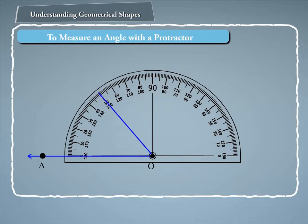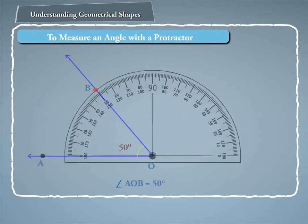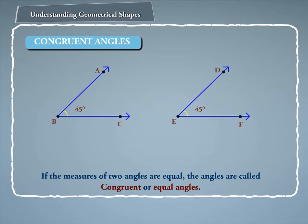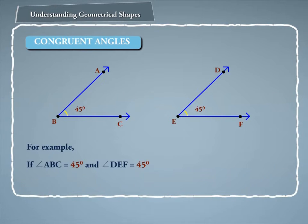Similarly, the measure of angle AOB is equal to 50°. We write it simply as angle AOB equals 50°. Congruent angles: if the measures of two angles are equal, the angles are called congruent or equal angles. For example, if angle ABC equals 45° and angle DEF equals 45°, then angle ABC is congruent to angle DEF.